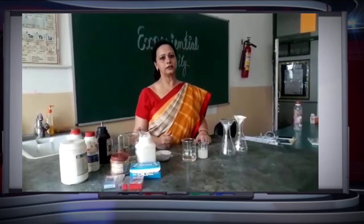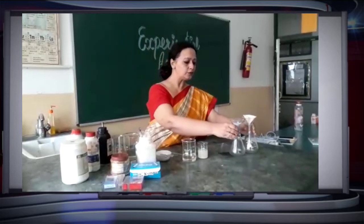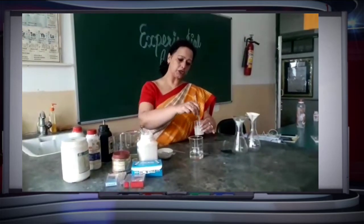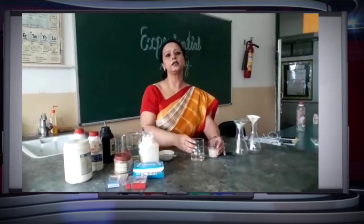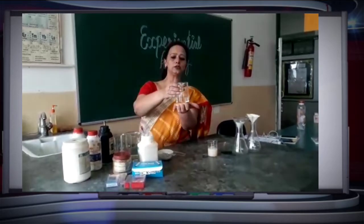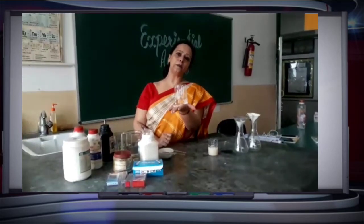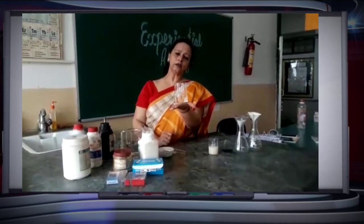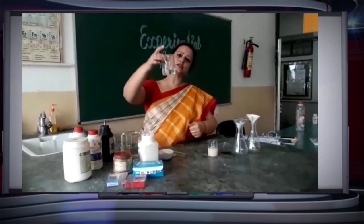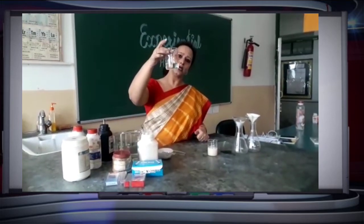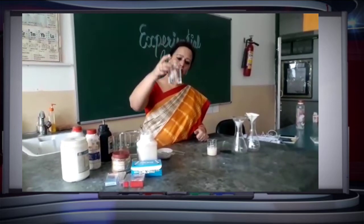Let us start with our first activity. First of all we are going to see whether these two solutions — suspension and true solution — are transparent or not. This is a true solution which we have made by dissolving sodium chloride into water. You can see this is transparent. That is why we say true solution is a homogeneous mixture and it is always transparent — meaning we can see through it.